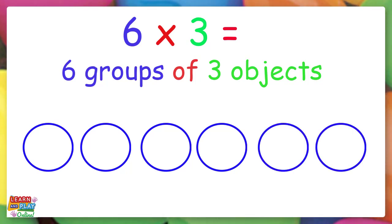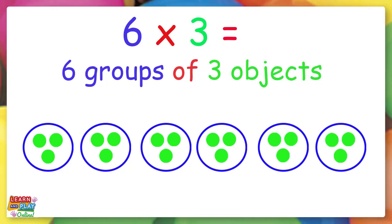Now let's put 3 dots in each group. Now that we have all the dots, what is the answer to 6 times 3?